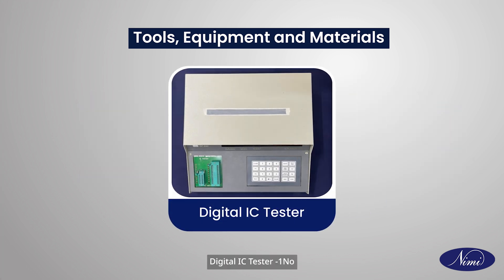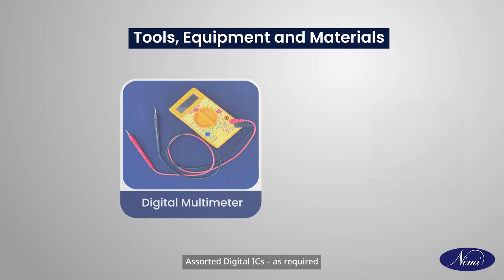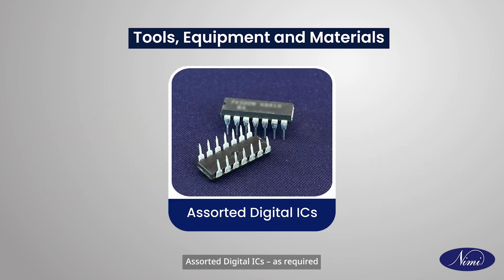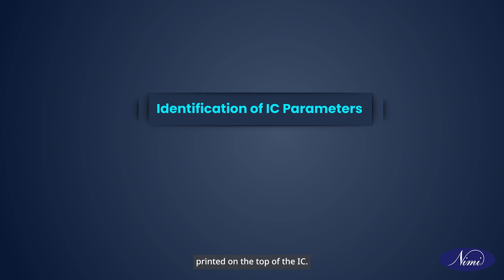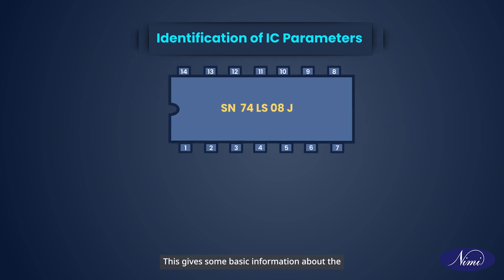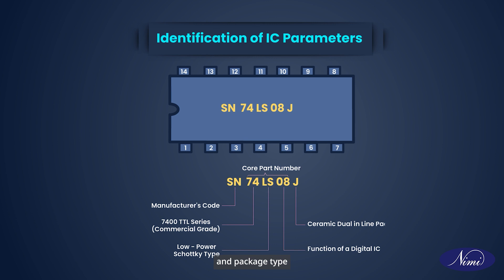We will need the following tools, equipment, and materials: a digital IC tester, a digital multimeter, and assorted digital ICs as required. For identification of IC parameters, first look at the part number printed on the top of the IC. This gives basic information about the IC such as its logic function, logic family, performance, power dissipation, manufacturer, and package type.